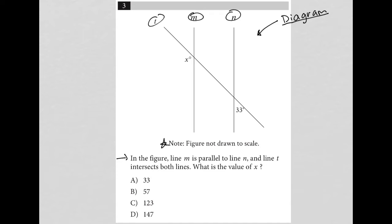The question says, in the figure, line M is parallel to line N. Okay, so like we expected, those two lines are parallel. And line T intersects both lines. What is the value of X?